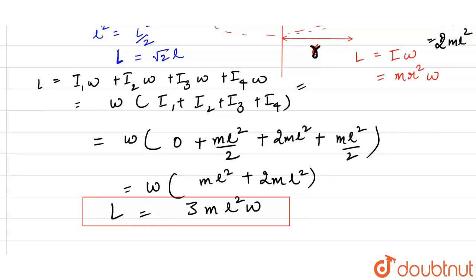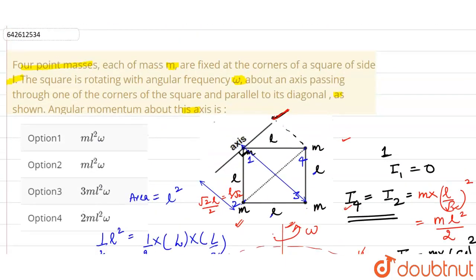Matching with the answer options, 3ML²·omega corresponds to option 3, which is correct.